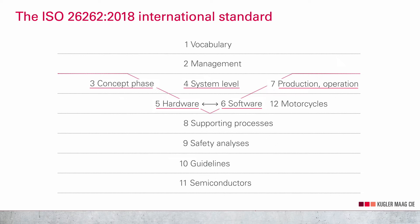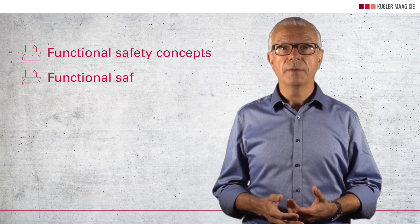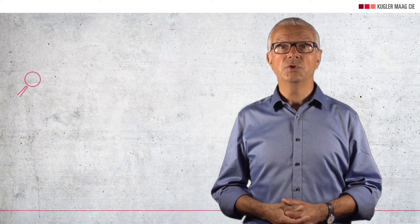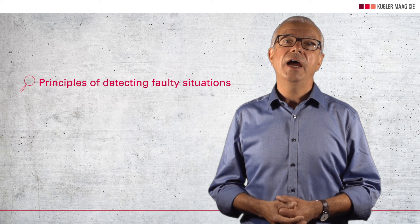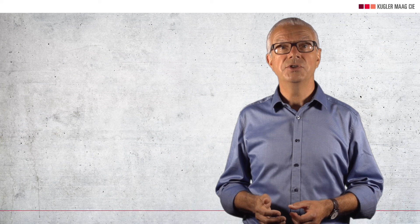Safety goals must be addressed as one important aspect along with development. At the vehicle level, this means that based on the safety goals, a functional safety concept and functional safety requirements must be developed. The purpose of this concept is to describe the principles of detecting faulty situations and how to react in such situations. For example, the airbag should be deactivated as soon as a safety mechanism detects that it is no longer working correctly.